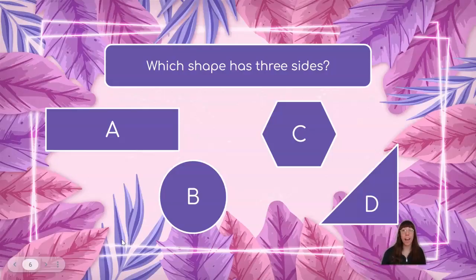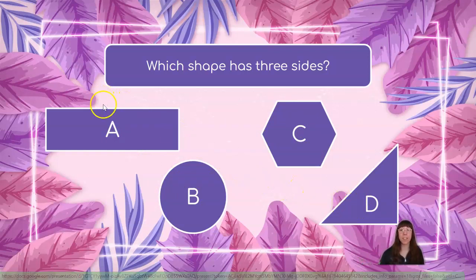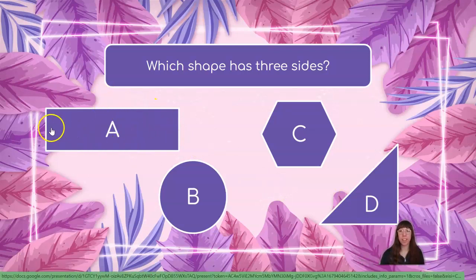Which shape has three sides? We have A, B, C, and D. Let's start by counting the number of sides on shape A: one, two, three, four. Hmm, that has too many sides. Let's take a look at shape B. Shape B doesn't have any sides.